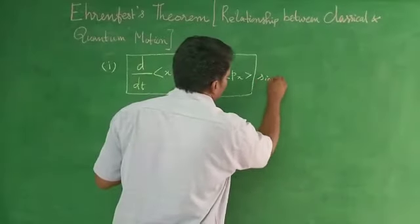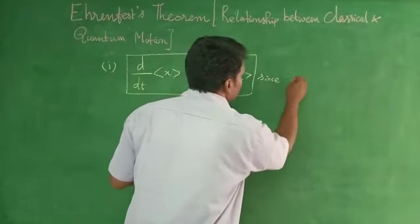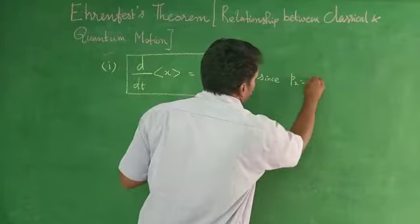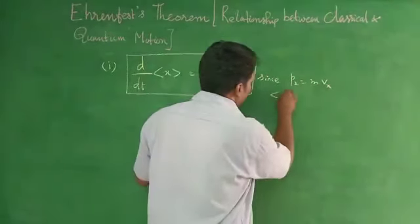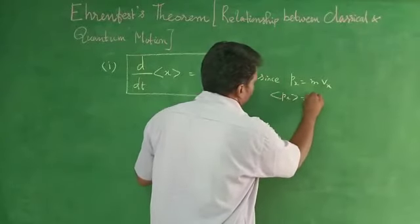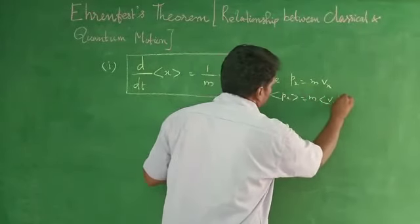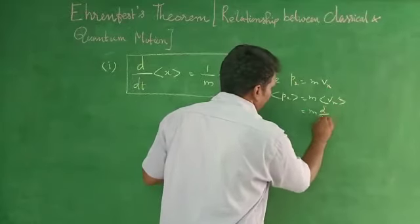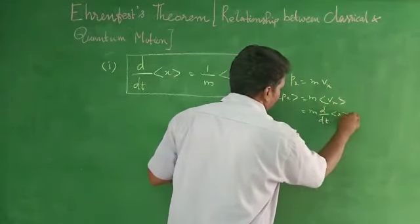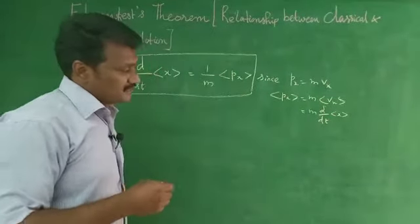It comes from, since momentum px equals m vx, it is mass into velocity. So operator px is equal to m into operator vx. Since operator vx is nothing but d by dt of x, that is dx by dt is nothing but velocity.